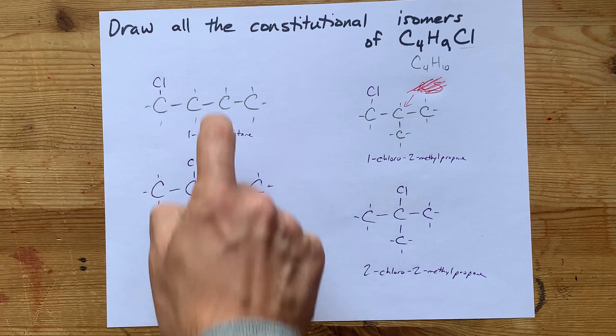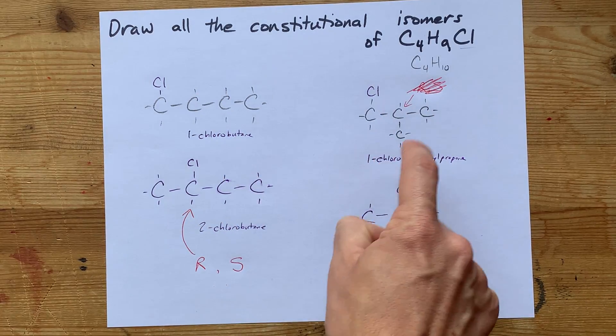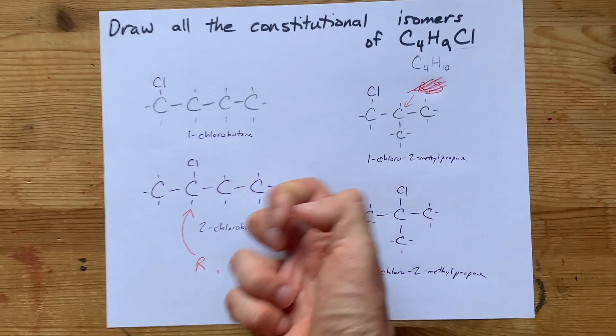Cool. Anyways, the constitutional isomers are this one, this one, this one, and this one. 1-chlorobutane, 2-chlorobutane, 1-chloro-2-methylpropane, and 2-chloro-2-methylpropane. Nice.